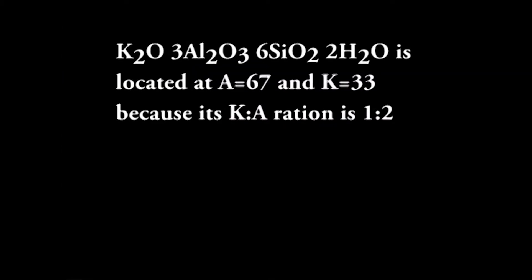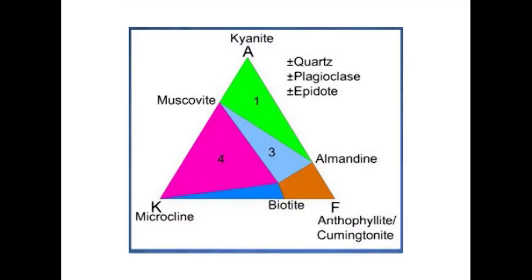Muscovite of ideal composition K2O · 3Al2O3 · 6SiO2 · 2H2O is located at A equal to 67 and K equal to 33, because the potassium to alumina relation ratio is 1:1:2, and an amount of Al2O3 equal to 1 K2O has already been subtracted from the Al2O3 values.